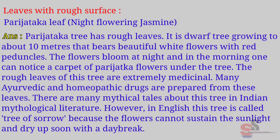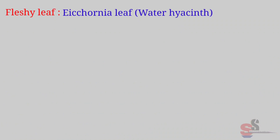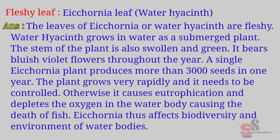In English, this tree is called the 'tree of sorrow' because the flowers cannot sustain the sunlight and dry up soon with daybreak. The plant produces more than 3,000 seeds in one year. The plant grows very rapidly and needs to be controlled; otherwise it causes eutrophication and depletes the oxygen in the water body, causing the death of fish. It thus affects the biodiversity and environment of water bodies.